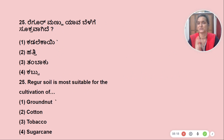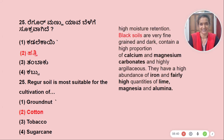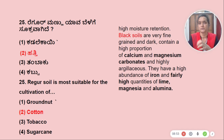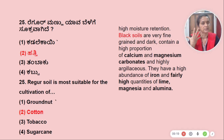The regular soil is the most suitable for cultivation of groundnut, cotton, and tobacco. This can be a solution for the protection of the soil — this is a high moisture retention. It contains calcium, magnesium, and carbonate. This is good for high moisture retention.